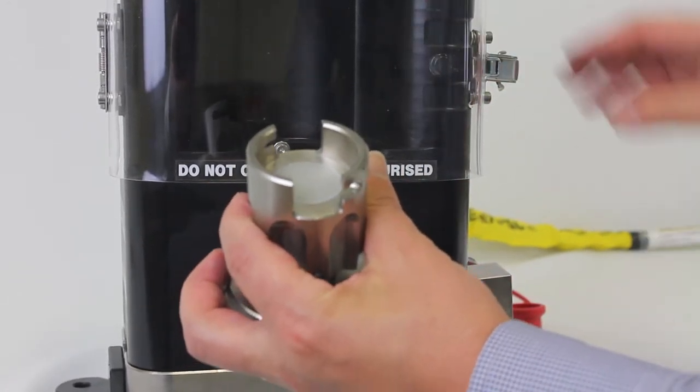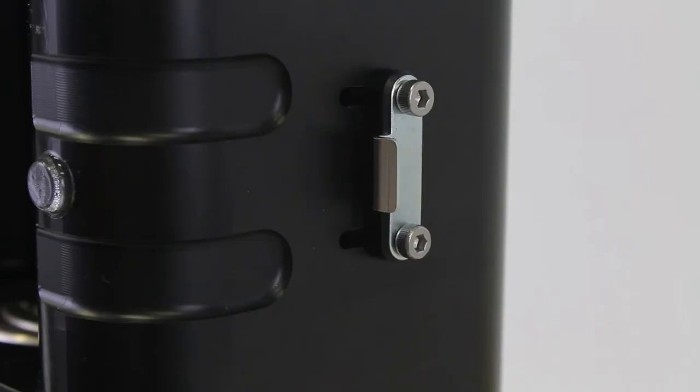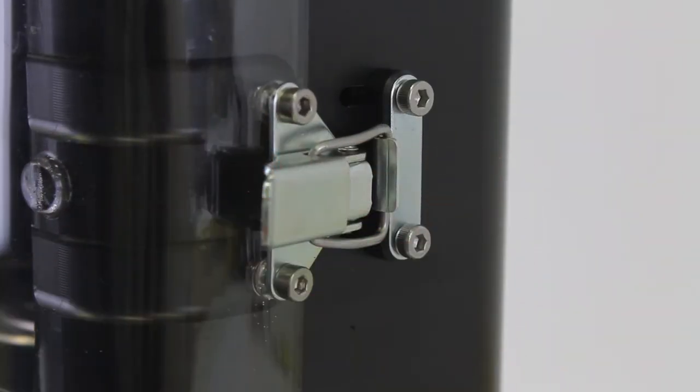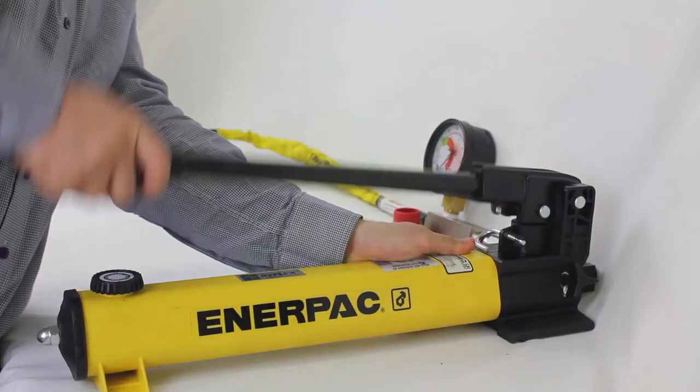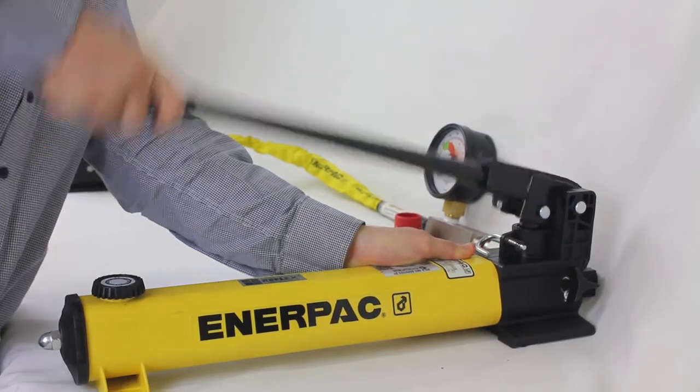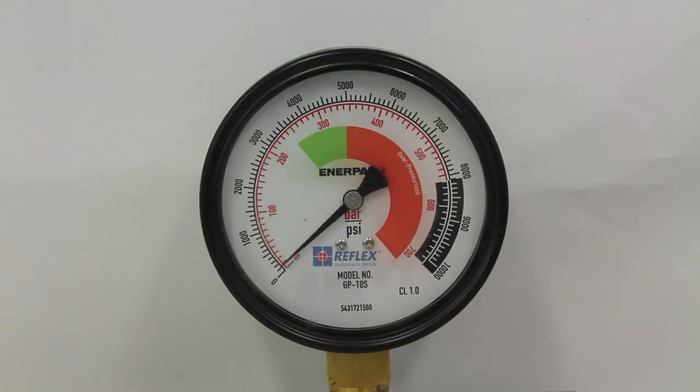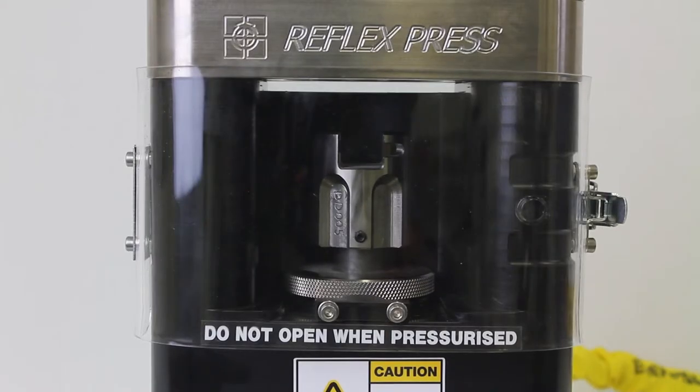Close and latch the door. Close the relief valve and begin pumping. The die will rise against the top of the press and the sample will be progressively pressed out of the die.